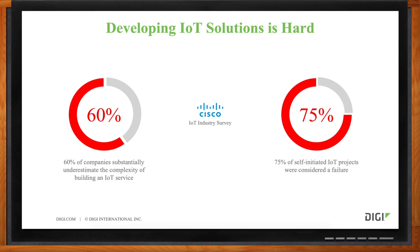It's pretty easy to throw together a project with an Arduino or Raspberry Pi, but those aren't really scalable solutions. You really need to be thinking about that when selecting an IoT partner. Additionally, Cisco found that 75% of self-initiated IoT projects were considered a failure, which is just mind-boggling — 75% of those projects are a failure.